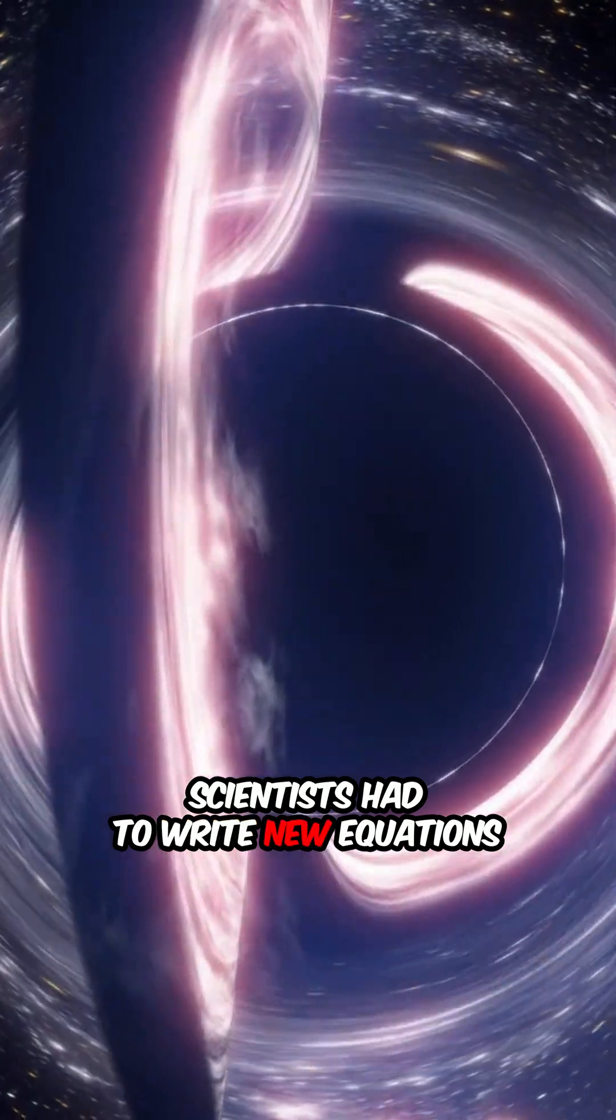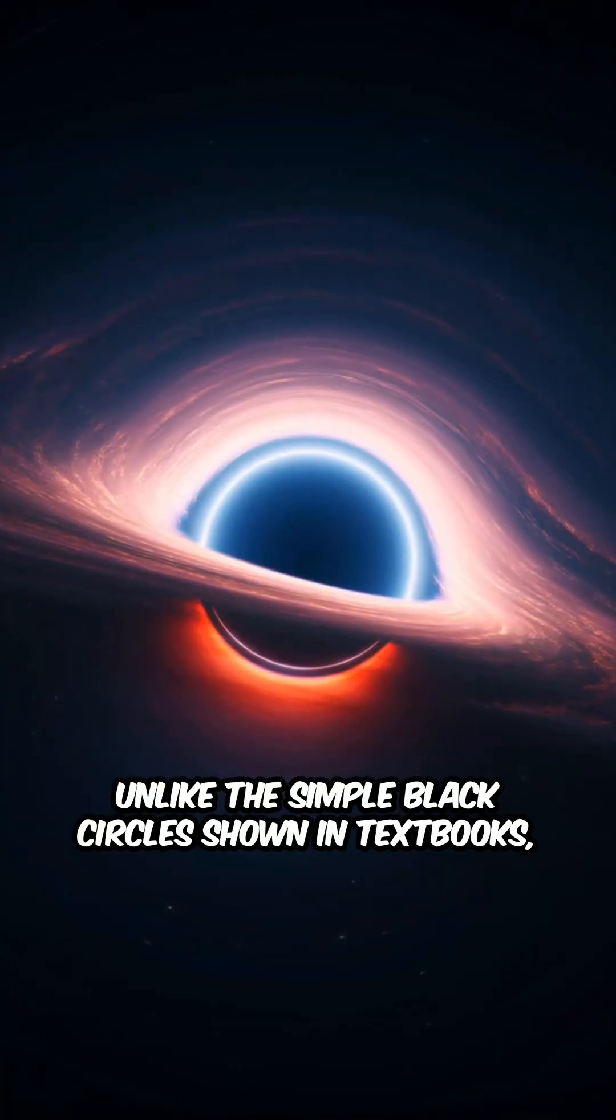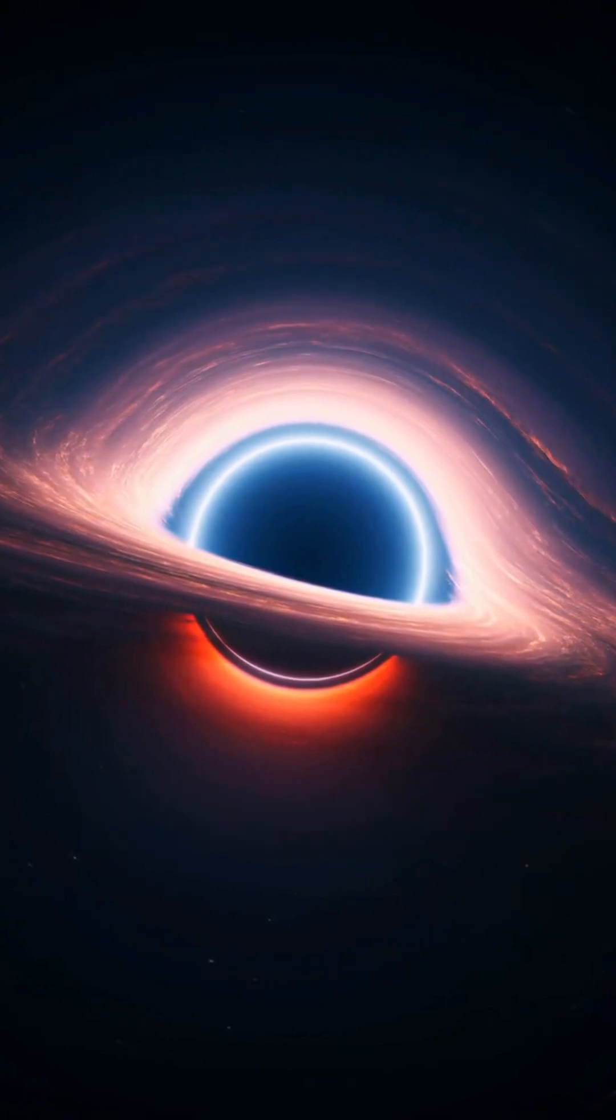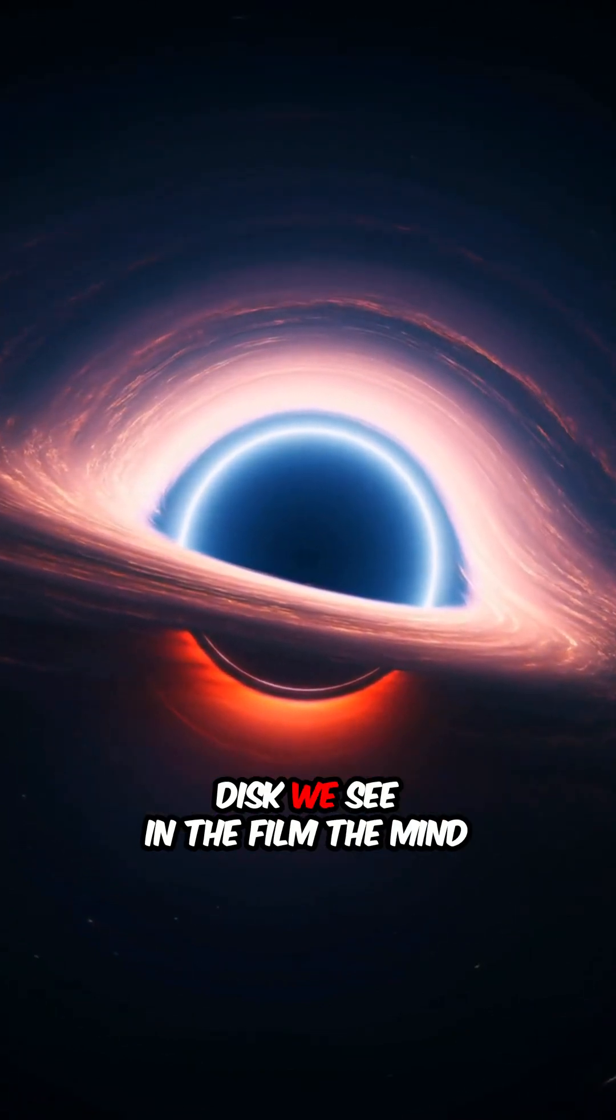Scientists had to write new equations to render the black hole accurately. Unlike the simple black circles shown in textbooks, Thorne's equations revealed how light bends around a rapidly spinning black hole, creating that stunning accretion disc we see in the film.